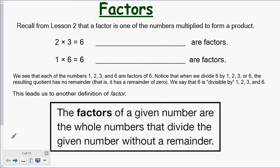Recall from Lesson 2 that a factor is one of the numbers that you multiply to form a product. Remember, factories make products. In the multiplication equation 2 times 3 equals 6, 2 and 3 are factors because they are what's multiplied to make the product of 6.